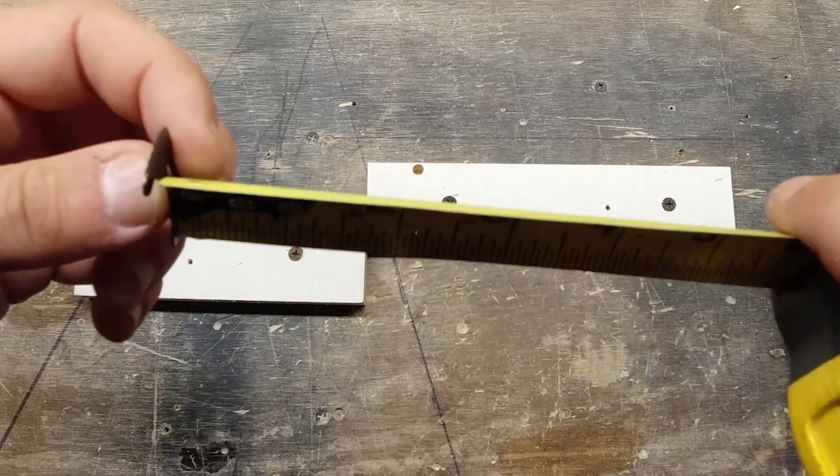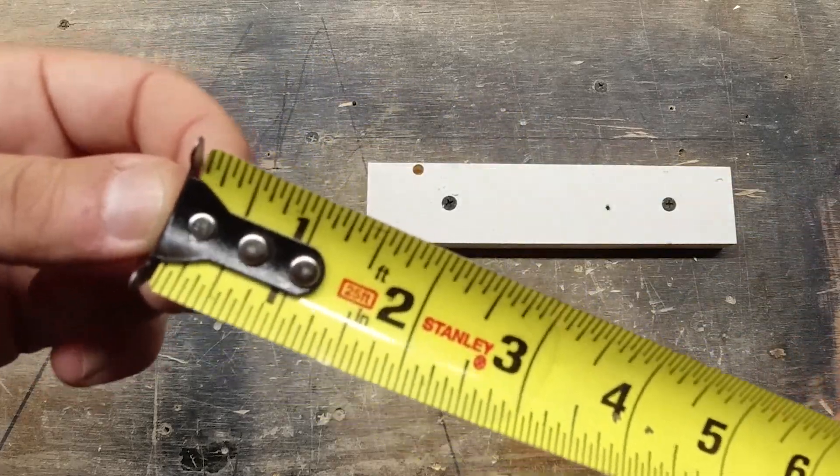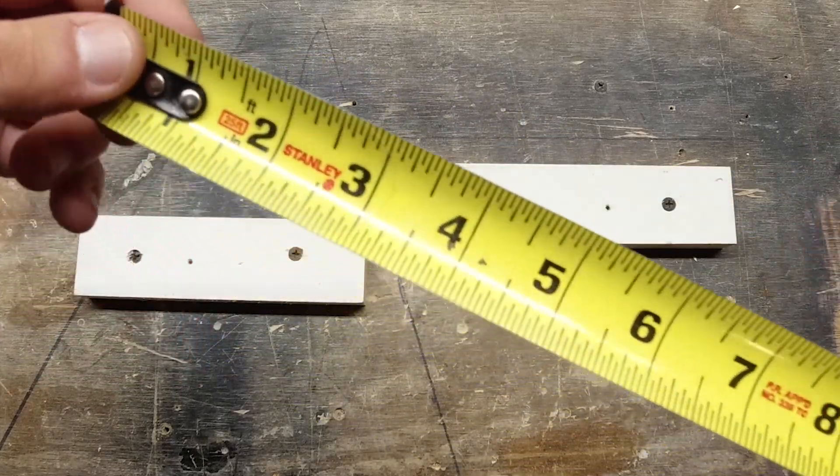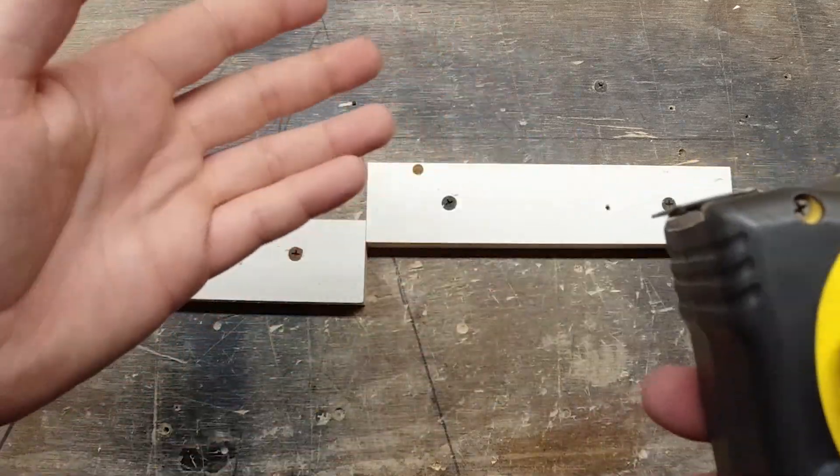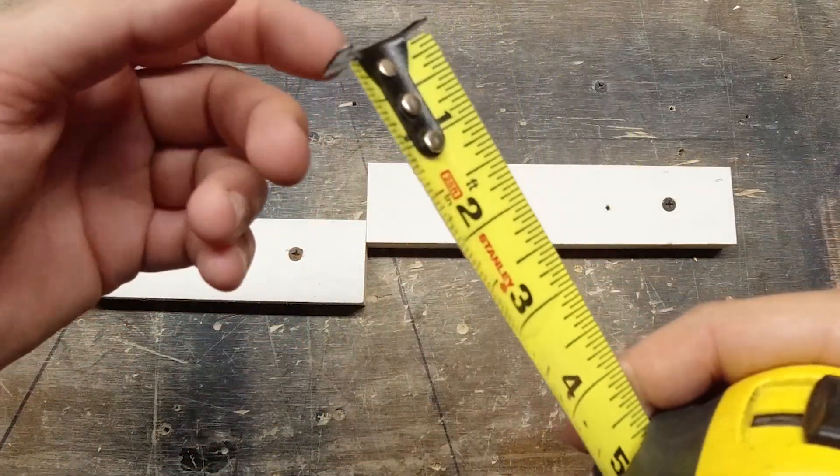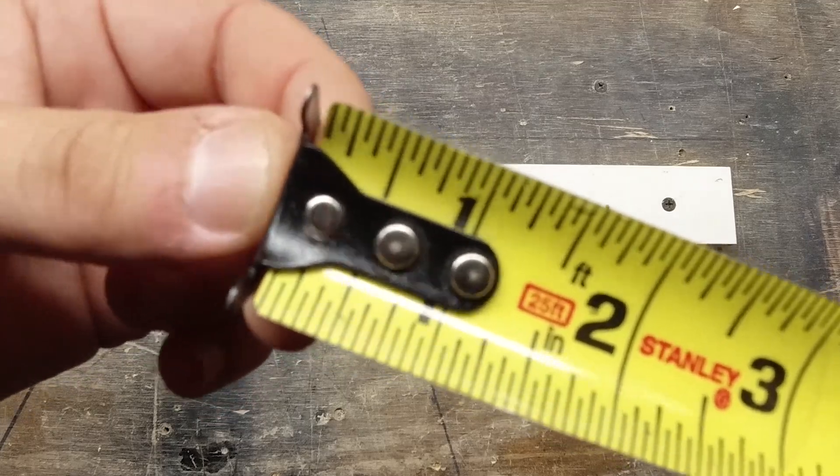If you're doing sheetrock or framing or anything like that and your tape is a little loose here over the years, that's fine. It's not too important. But that is the reason for why the end of the tape measure moves.